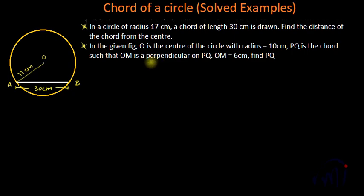So the shortest distance between any line and a point is always the length of the perpendicular. Let this be the perpendicular and let me call this point as point P. We have already learned that the perpendicular drawn from the center to a chord actually bisects the chord or divides it into two equal parts. So if AB is equal to 30 centimeters, then AP will be equal to 30 by 2, that is 15 centimeters.